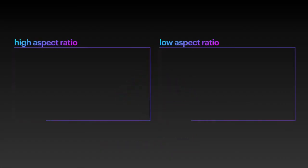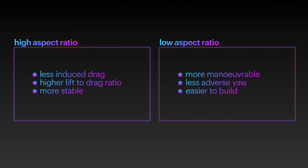By and large, high aspect ratio wings generate less induced drag, have a higher lift to drag ratio, and make aeroplanes more stable in flight. Low aspect ratio wings allow aeroplanes to be more manoeuvrable, reduce the adverse yaw effect, and are easier to design and build.